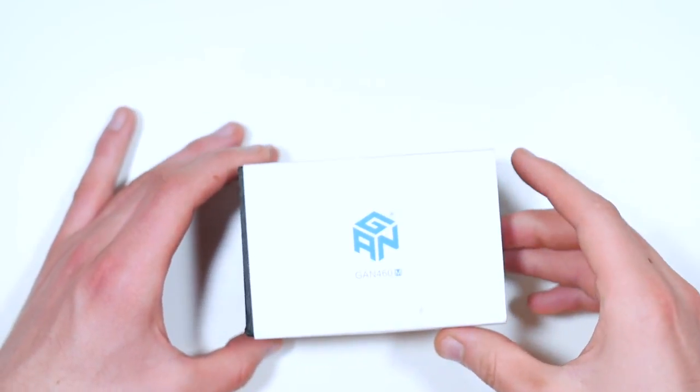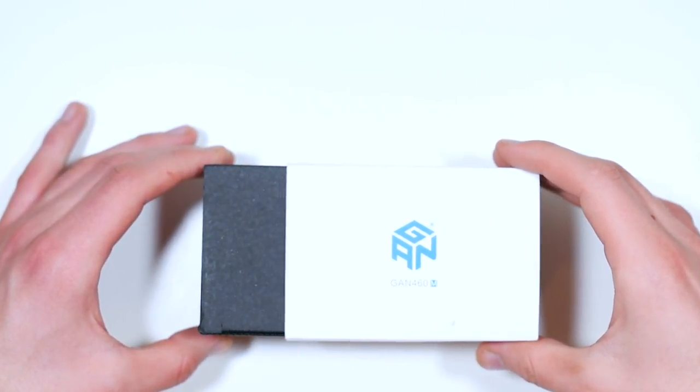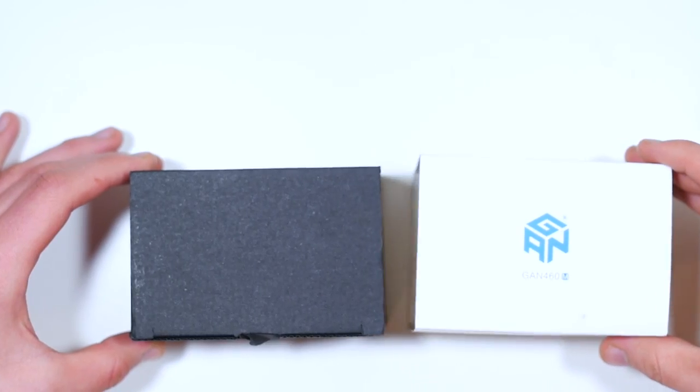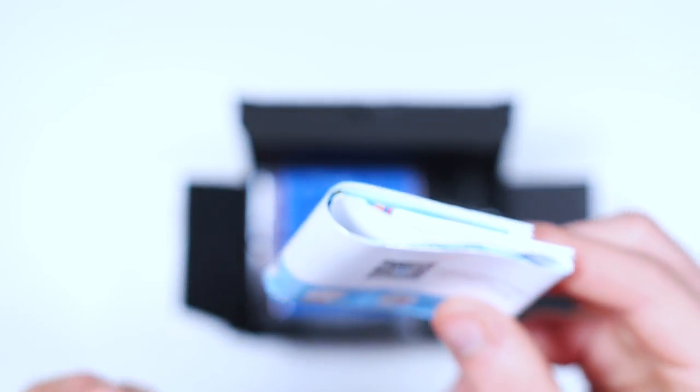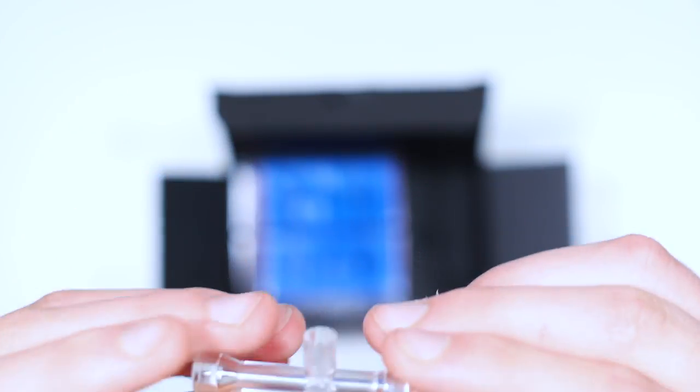In here we've got a nice GAN bag. These are awesome—I have like five and I love them. We're also given a nice GAN pamphlet on 4x4 stuff. I believe there are a lot of algorithms in here, including parity, which is awesome. This is pretty embarrassing, but I actually completely forgot how to do OLL parity, and I can't find the algorithm I had memorized before—it's really frustrating me. Hopefully this will help. We've also got a tensioning tool. Let's get this open and try it out.